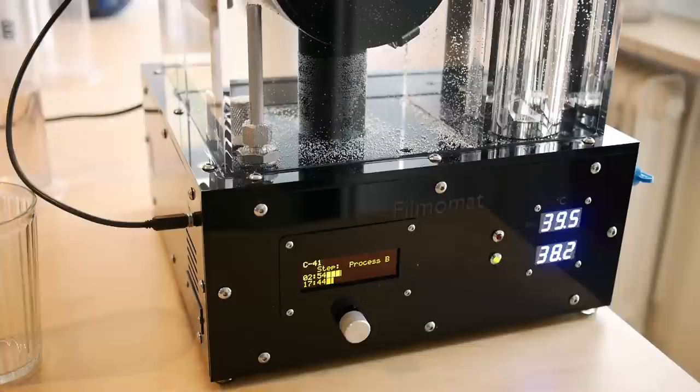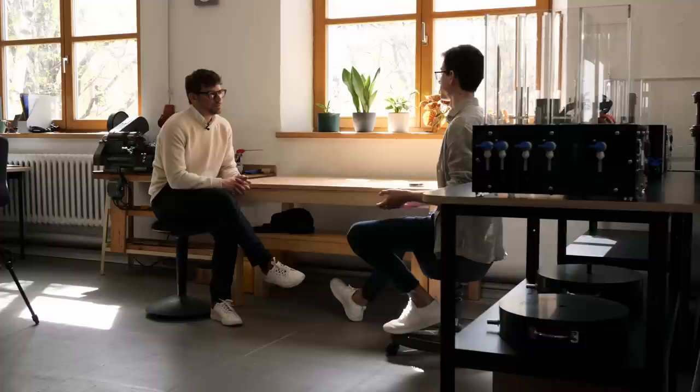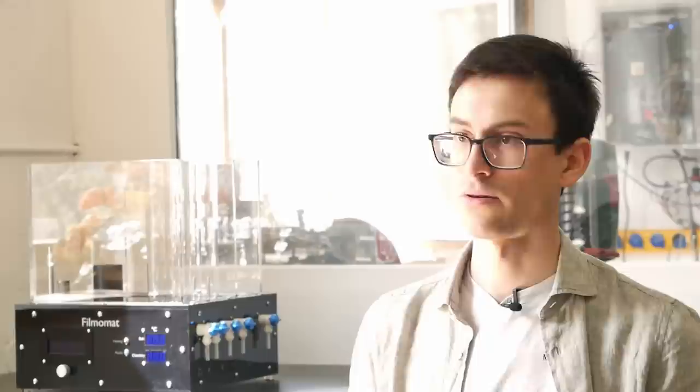And this was, of course, a little bit limiting for certain customers. So in 2020, I finally decided to change this design towards a rotational processing approach. So in the new version, the film tank is now horizontally in the machine and the spirals rotate in the tank. And the great benefit of this design is that you need a lot less chemistry to process more film.